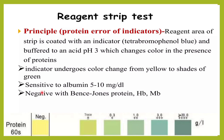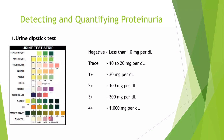This test is sensitive to albumin but gives negative results for Bence Jones proteins, hemoglobin, myoglobin, etc. When comparing the reagent strip: yellow is negative, meaning less than 10 mg/dL protein. Trace is 10–20 mg/dL. 1+ means 30 mg/dL, 2+ is 100 mg/dL, 3+ is around 300 mg/dL, and 4+ is around 1000 mg/dL.